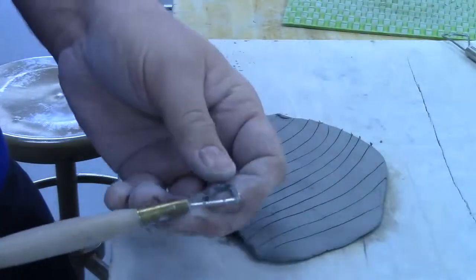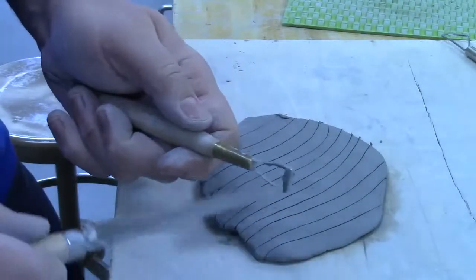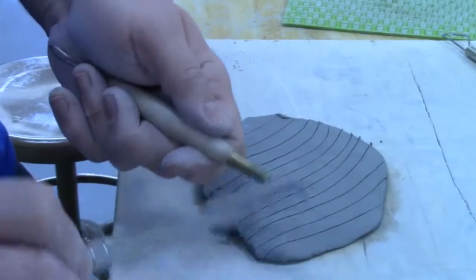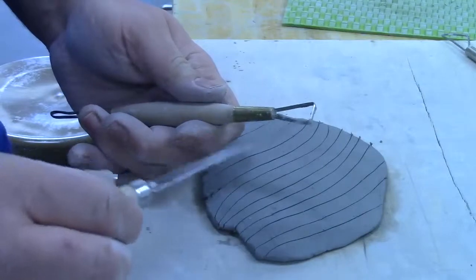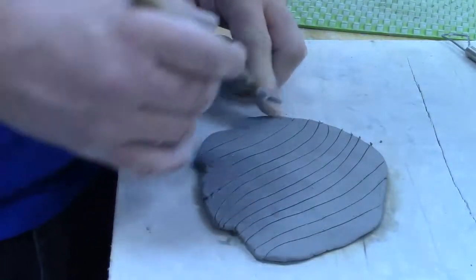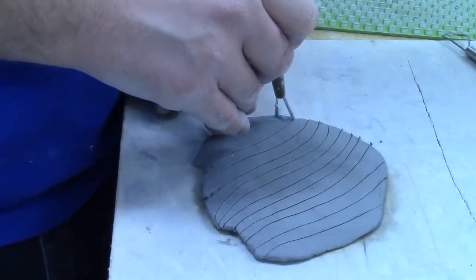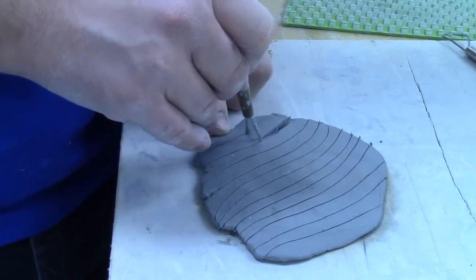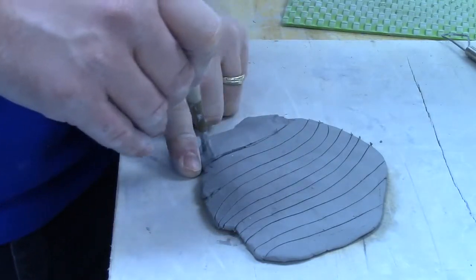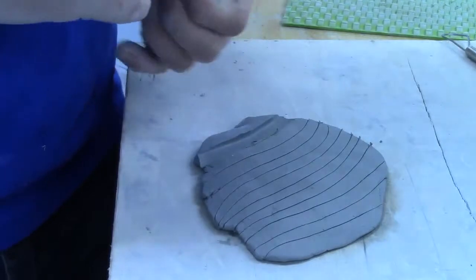So, one of the easiest ways is to use one of these loop tools. It has this loop on the end and you actually carve down half of these. So I'm going to follow the lines that I have in the clay already and I just carve it down.